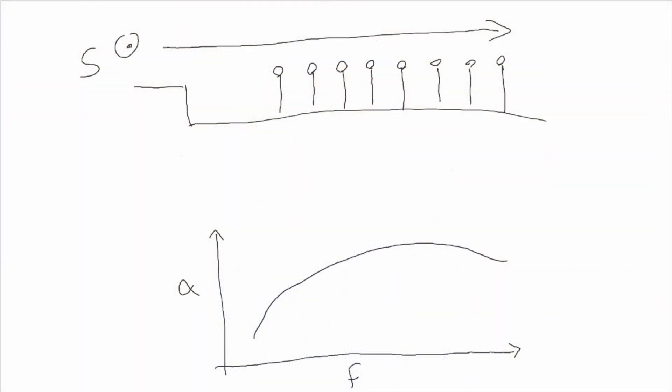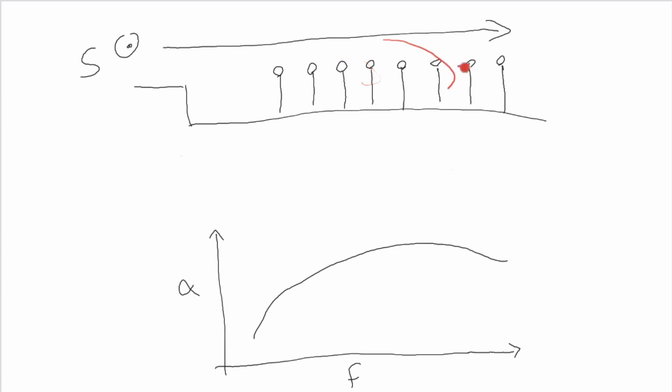Did you also know that there is an acoustical impact of the way the audience is positioned? There is something known as grazing sound incidence — it literally means what the name suggests. Sound waves will graze a surface that is parallel to them when the distance is sufficiently near, resulting in undue absorption of sound over a wide frequency range.